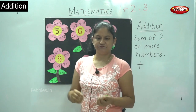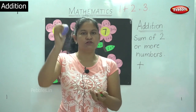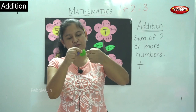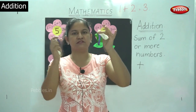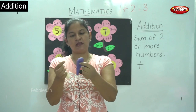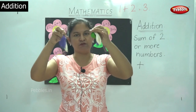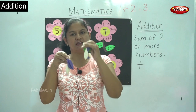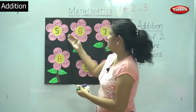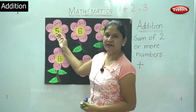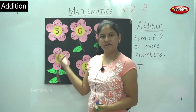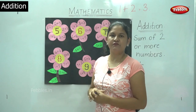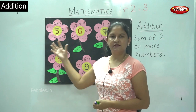Next I have 2 balloons in my right hand and 3 balloons in my left. When I total up the number of balloons I have in both hands, it totals to 2 plus 3 gives me 5. So 2 plus 3 gives me 5 or 3 plus 2 gives me 5. I hope you have understood the concept of this number 5.